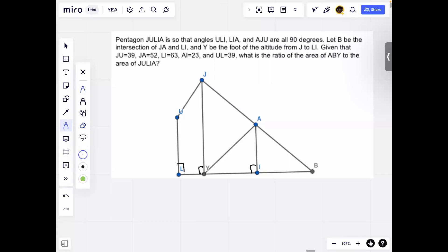Hi, everyone. Welcome to this week's video. The problem says pentagon JULIA is such that angles ULI, LIA, and AJU are all 90 degrees. Let B be the intersection of JA and LI, and Y be the foot of the perpendicular from J to LI.